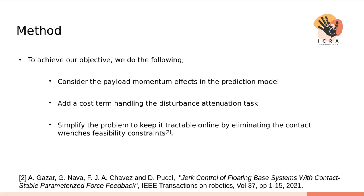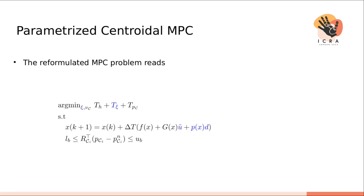To do so, we consider the payload momentum effects in the prediction model. In addition, we design a cost term in the cost function that handles the disturbance attenuation task. We simplify the problem by eliminating the previously highlighted constraint, namely the contact forces feasibility constraint, thanks to a suitable parametrization previously introduced by one of my co-authors in the Transactions of Robotics paper cited.